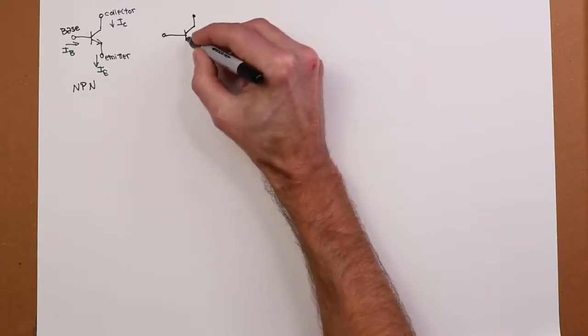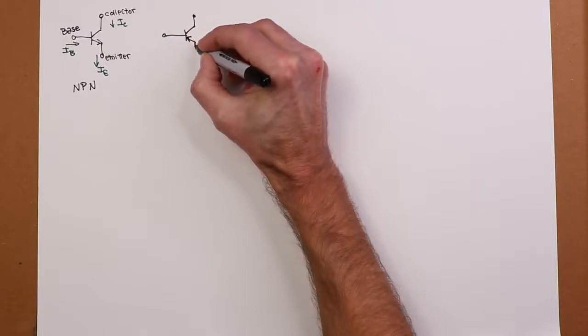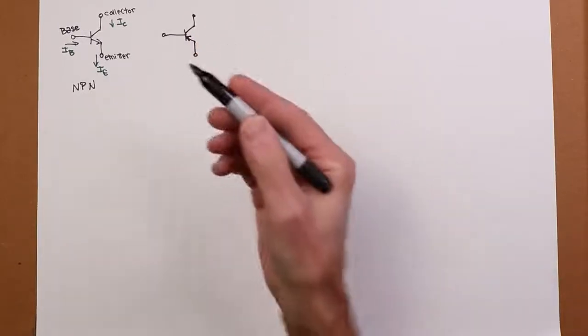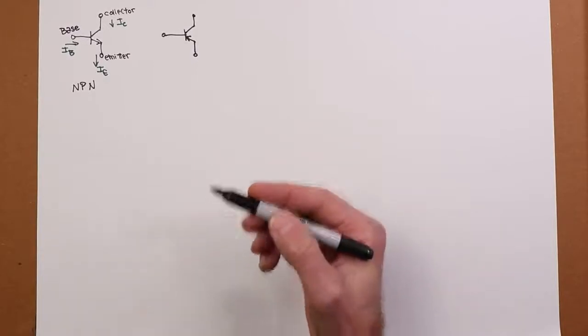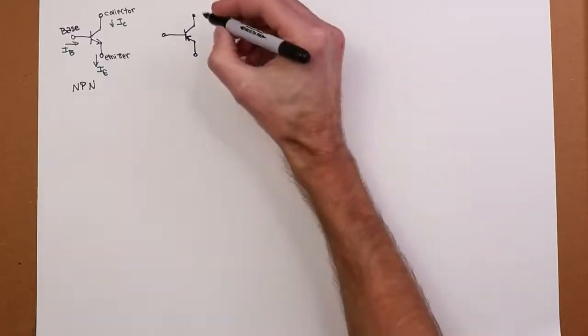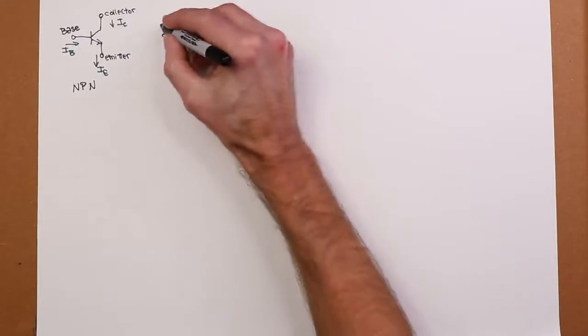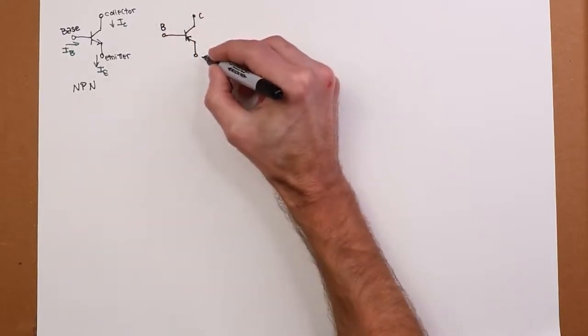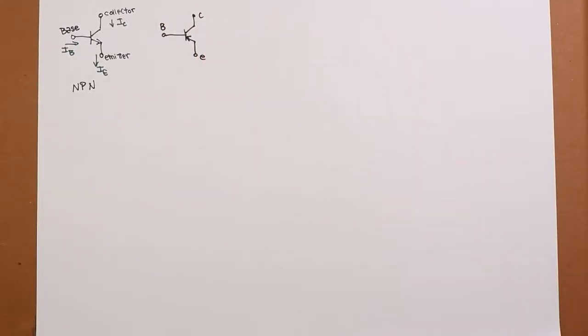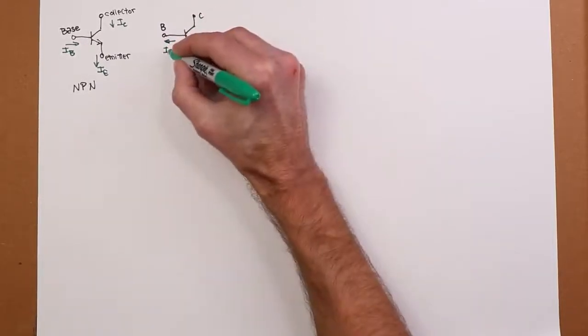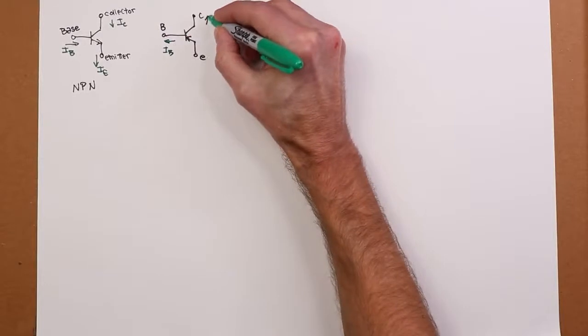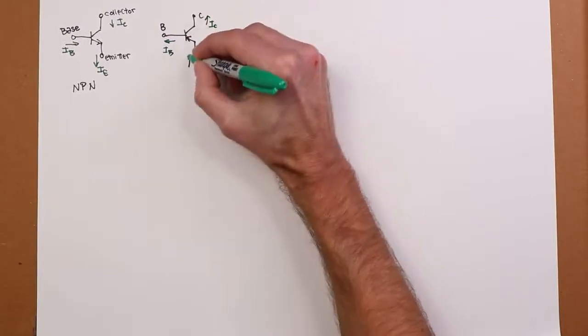all we change is the arrow. So again, arrow points in the direction of conventional current flow and N material. So it's PNP. Again, this is your collector, your base, and the emitter. And current flow would be out of the base, out of the collector, and into the emitter.